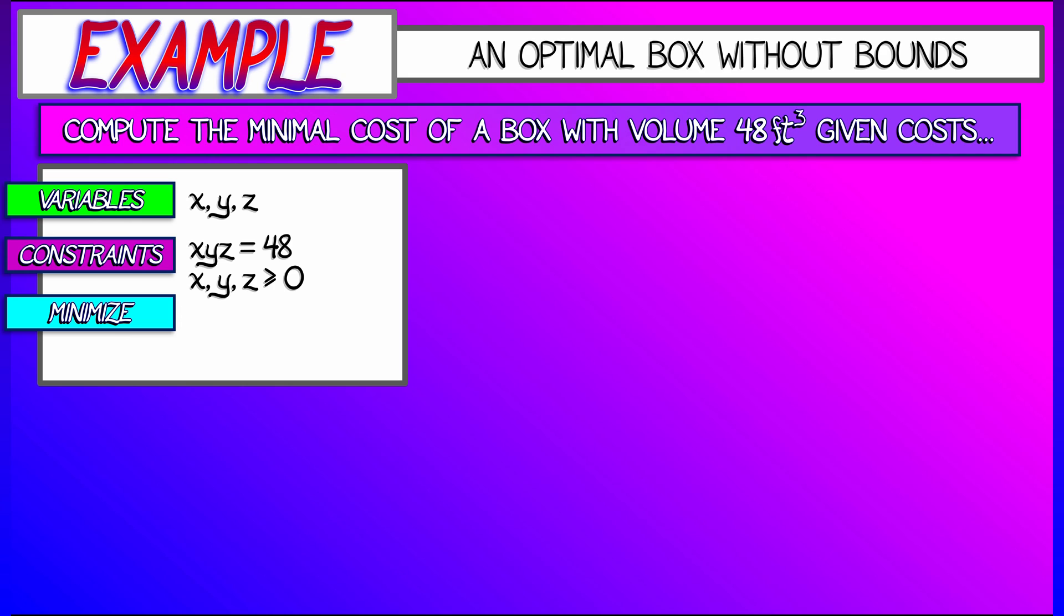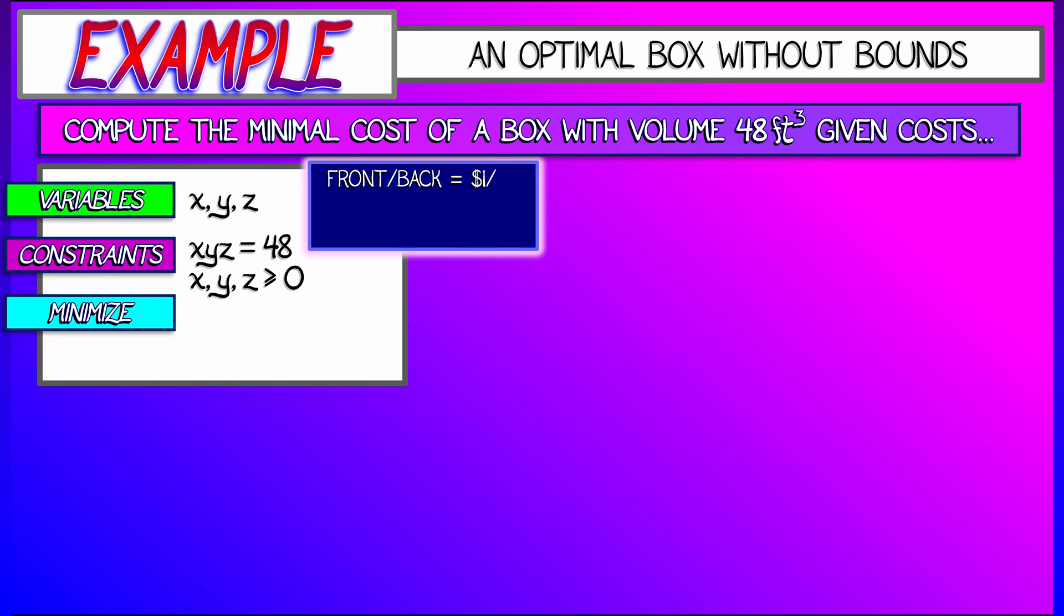What we want to do is minimize the cost, assuming that the front and back costs $1 per square foot, the top and bottom costs $2 per square foot, and the left and right hand sides cost $3 per square foot. That gives us a function f of X, Y, and Z equal to 4XY plus 2XZ plus 6YZ. We need to minimize that function.